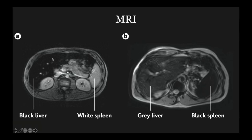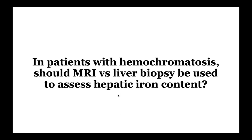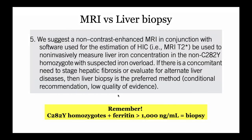Generally, you can do an MRI to quantify iron if you have the software, and can make a diagnosis of hemochromatosis. However, the exception: anybody who is homozygous for C282Y and has a ferritin above 1,000 must get a biopsy — there is no way around it — because that's what determines fibrosis staging and actual iron quantification.